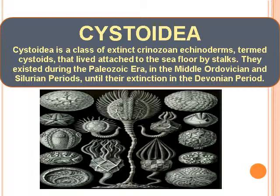Cystoidae is a class of extinct Crinozoan echinoderms, termed Cystoids, that lived attached to the sea floor by stalks. They existed during the Paleozoic Era in the Middle Ordovician and Silurian periods, until their extinction in the Devonian period.